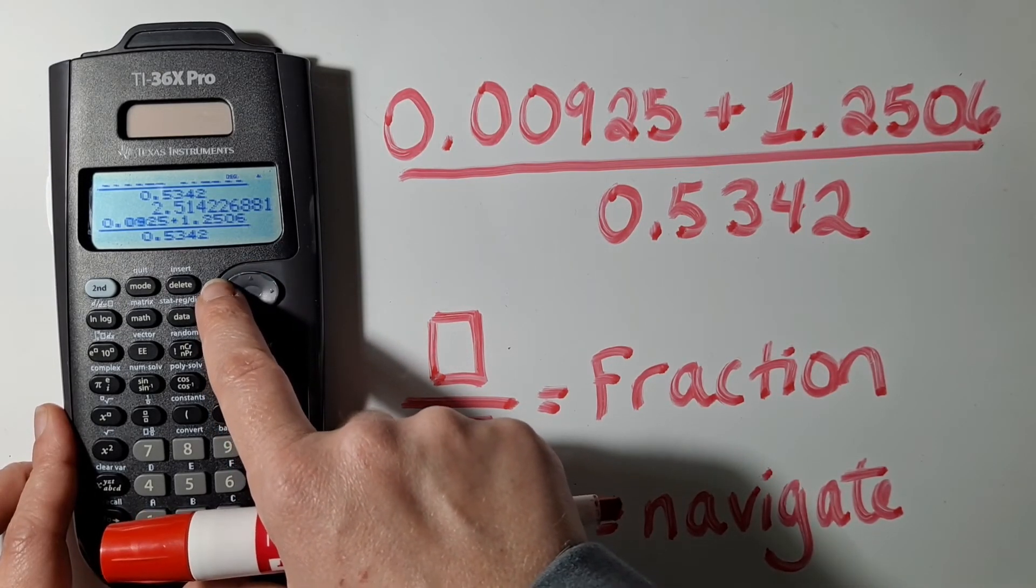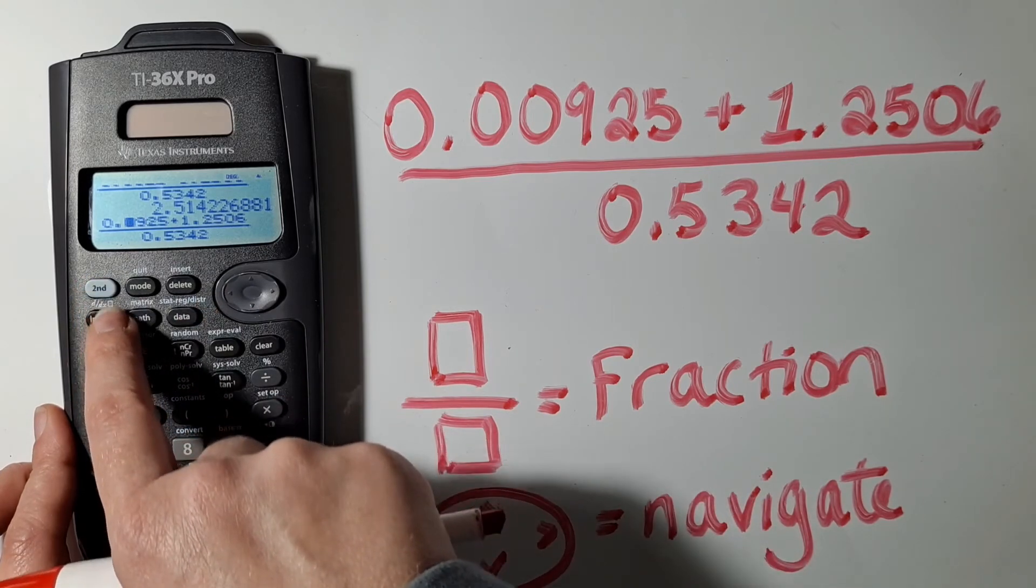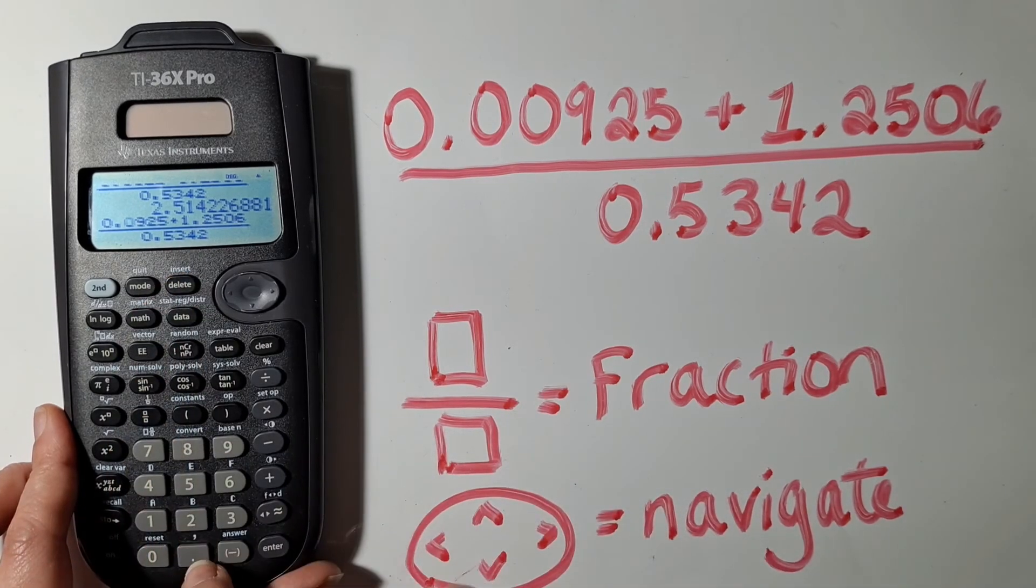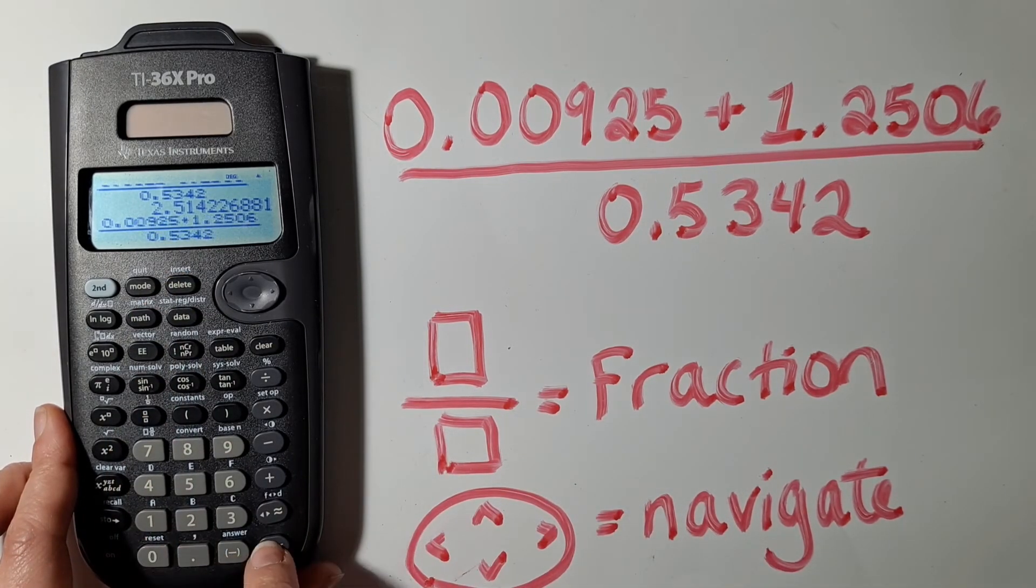And I know it needs to be in here, so I'm going to scroll over to where it needs to be, and I'm going to go 2nd, and then above the Delete, it says Insert. So I'm going to go 2nd, Insert, and then I'm going to type that second 0.